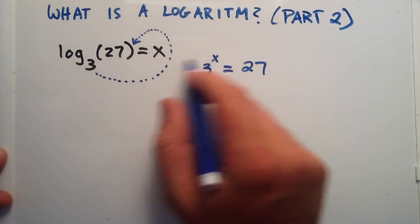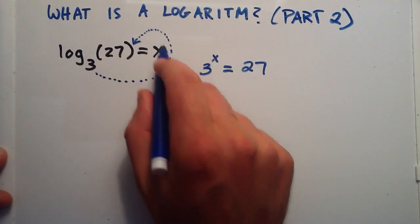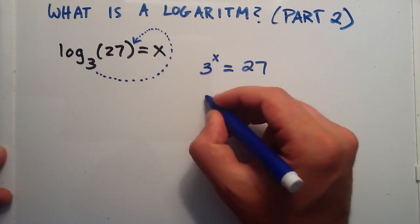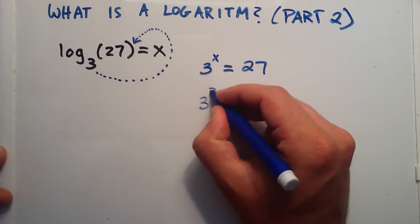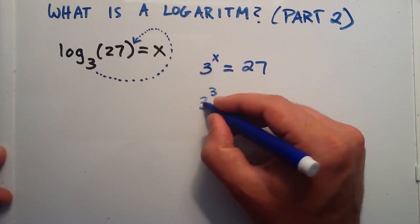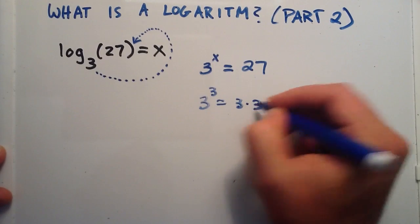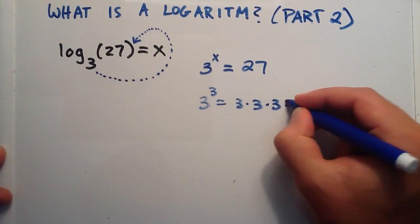So what is x? 3 raised to some power equals 27. So it turns out that 3 raised to the third power is simply 3 multiplied by itself 3 times. 3 times 3 is 9 times another 3 equals 27.